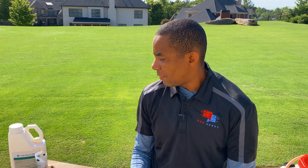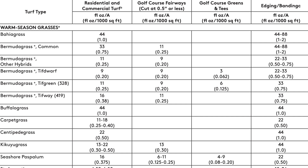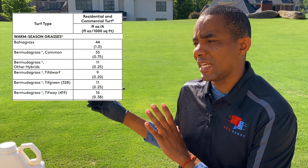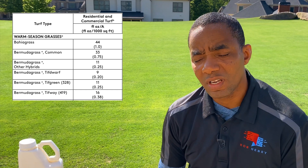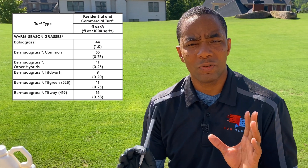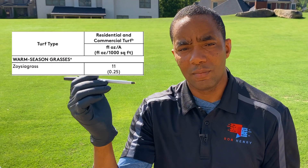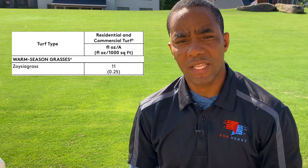For application rates — I'll put the chart up on screen now for Tenex. For Bermuda, specifically a TIFF 419 hybrid with some Arden 15 and Princess 77 mixed in, the application rate is about 0.25 to 0.38 ounces per thousand square feet. Zoysia is a little bit lower. Check the chart on screen or look at the label when you get the product. With growth regulators, more is not better — applying more won't get you longer regulation, and there's a limit to how much you can put in the turf in a growing season. Follow the label rate.